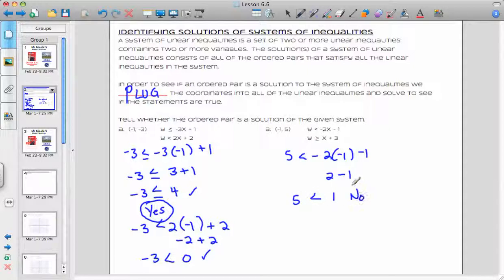So right away, I don't have to go any further. If it doesn't satisfy one of the inequalities, then it's not going to satisfy the entire inequality or the entire system. So no is the answer. This wouldn't be a solution to that set. And that's the first part of Lesson 6.6 with identifying whether or not we have ordered pairs that are solutions.